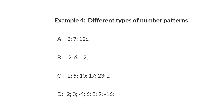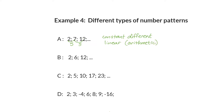Now for example four, we're looking at the different types of number patterns we will study this year. The first type: twelve minus seven is five, seven minus two is five — there is a constant difference. That is called the linear pattern. You've been doing it since grade nine, and next year it will be called arithmetic.